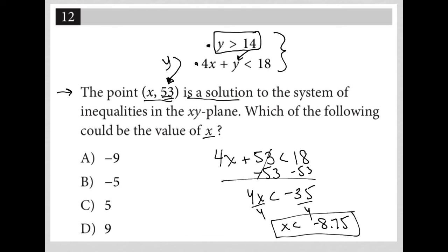So if x is less than negative 8.75, the only answer that makes sense is choice A, because negative 9 is the only answer choice that is less than negative 8.75.